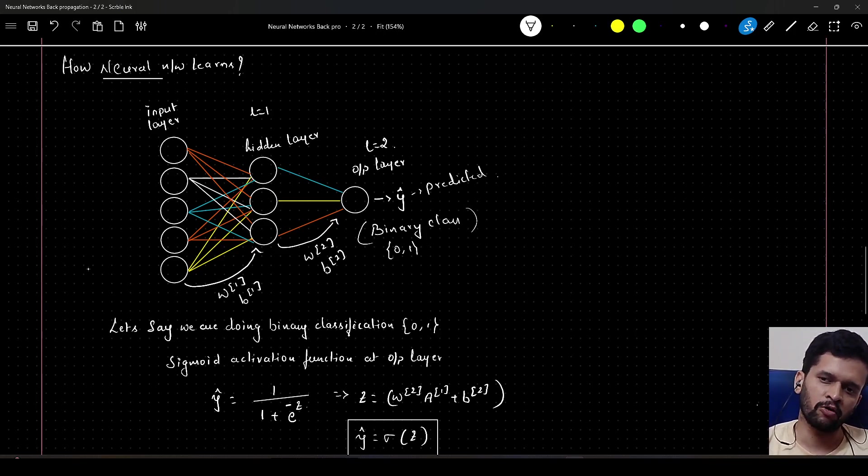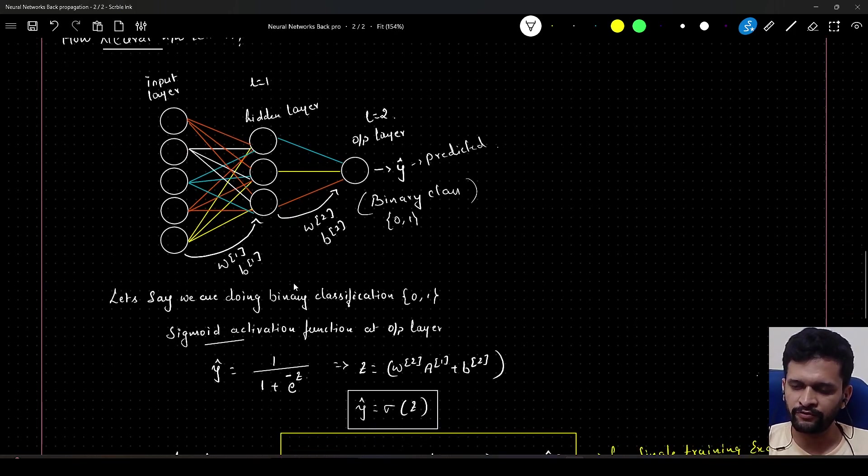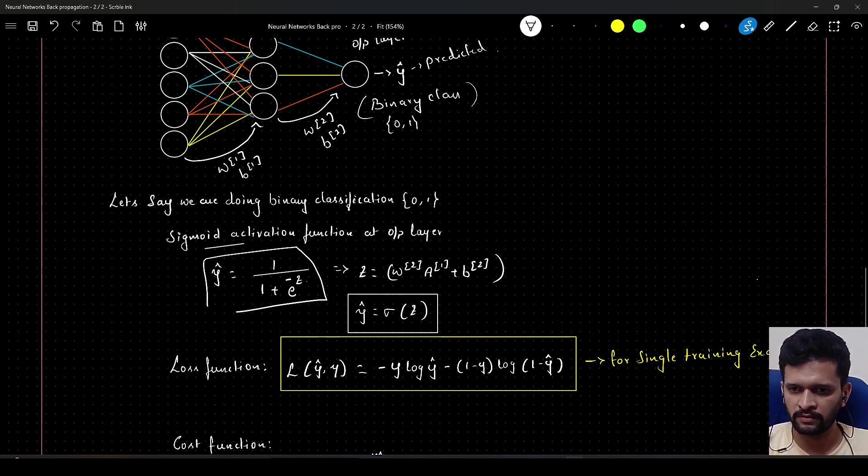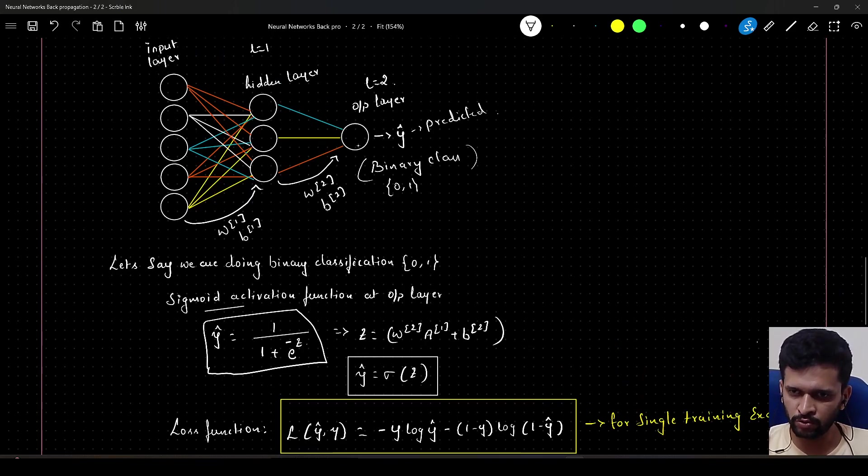The output will be having the sigmoid activation function. Sigmoid will predict either this or that. The sigmoid function formula is given like this: it is 1 by 1 plus e to the power minus z. In this case, z is equal to w2 into a1 plus b2.